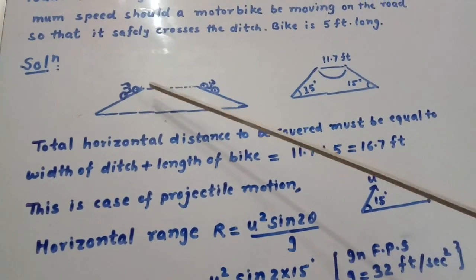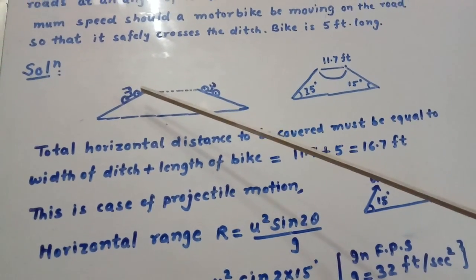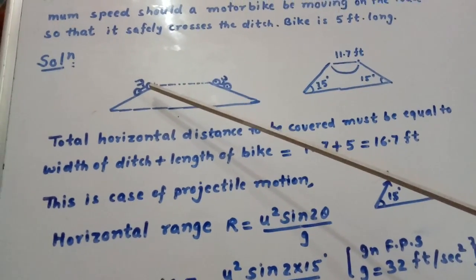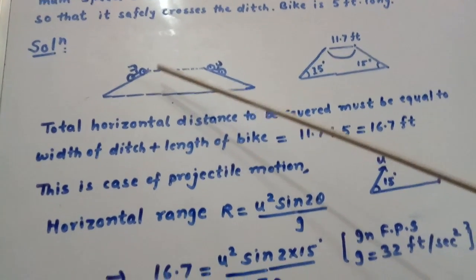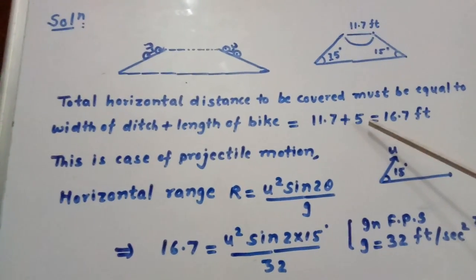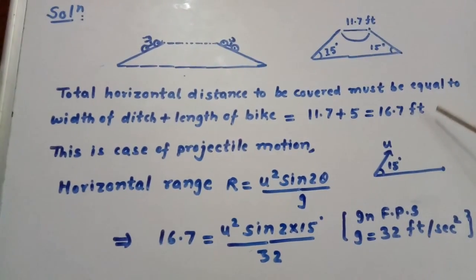Now, in order to cross this ditch, the bike has to cover its own length also. So total horizontal distance to be covered will be equal to 11.7 plus 5, that is 16.7 feet.